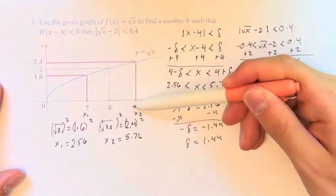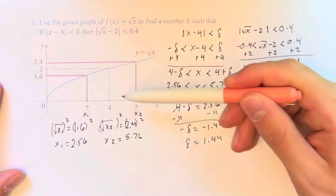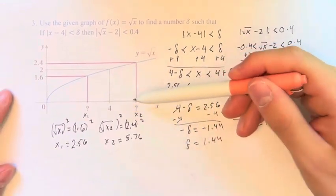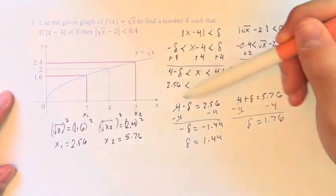And this is saying if we go 1.76 in this direction, we're also going to stay within values of the function that we're worrying about here, where it's between 1.6 and 2.4.